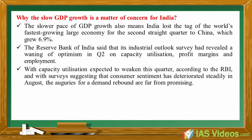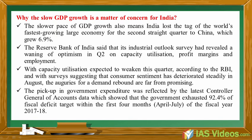With capacity utilization expected to weaken this quarter according to the RBI, and with surveys suggesting that consumer sentiment has deteriorated steadily in August, the auguries for a demand rebound are far from promising. The pick-up in government expenditure was reflected by the latest Controller General of Accounts data, which showed that the government exhausted 92.4% of the fiscal deficit target within the first four months of fiscal year 2017-18.